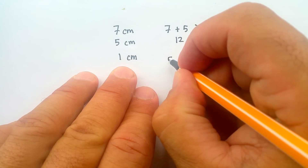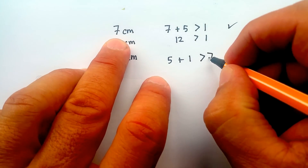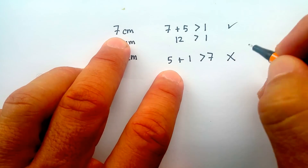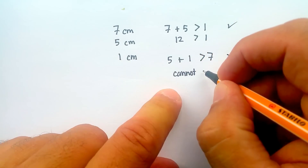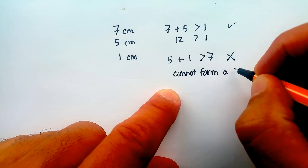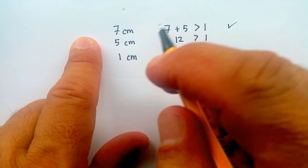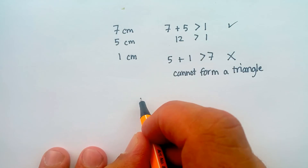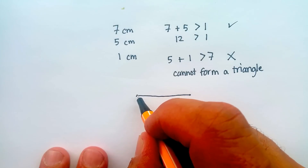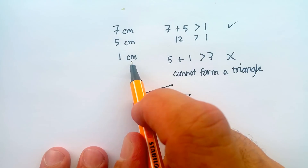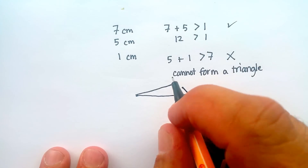Let's try the next two: five centimeters plus one centimeter — is that greater than the third side, which is seven? It's not. So these three line segments cannot form a triangle, no matter how you try. The easiest way to see it: take the longest side, seven centimeters, then put the second largest, five centimeters — does that last one, one centimeter, reach far enough to connect? It doesn't.